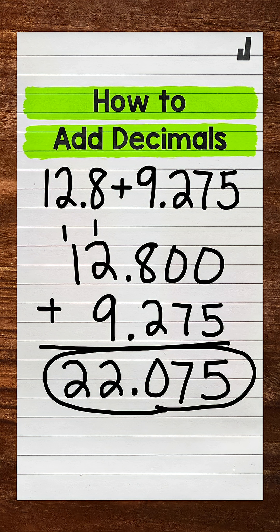So just remember when adding decimals, line up the decimals when setting up the problem. Use placeholder zeros if needed and then we can add. And always bring the decimal straight down into the answer. So the decimals are lined up throughout the entire problem.